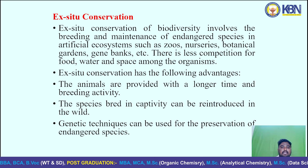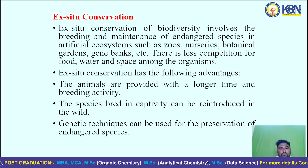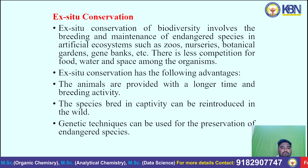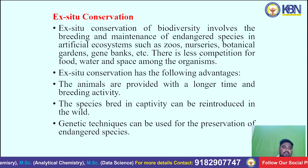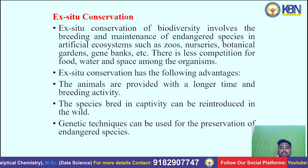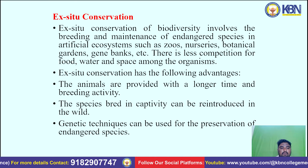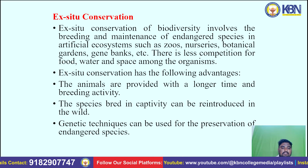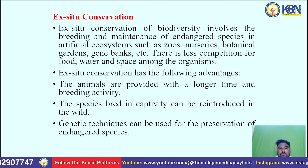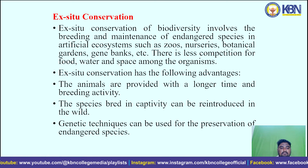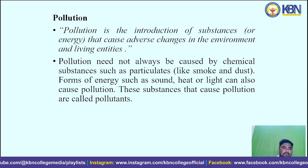Ex situ conservation involves the breeding and maintenance of endangered species in artificial ecosystems such as zoos, nurseries, botanical gardens and gene banks. There is less competition for food, water and space among organisms in these settings. Advantages include: animals are provided with longer time for breeding activity; species bred in captivity can be reintroduced into the wild; and cryogenic techniques can be used for the preservation of endangered species.